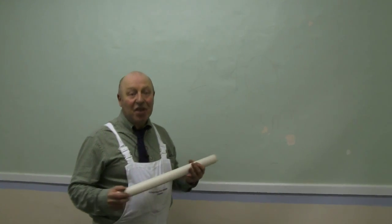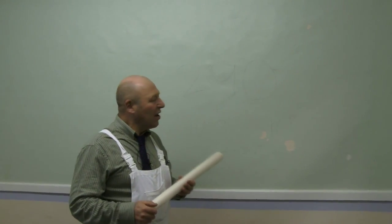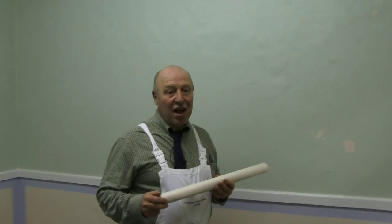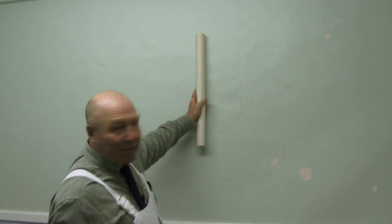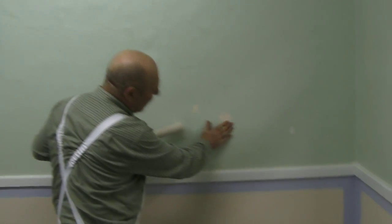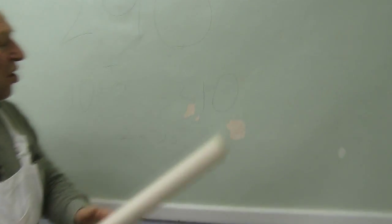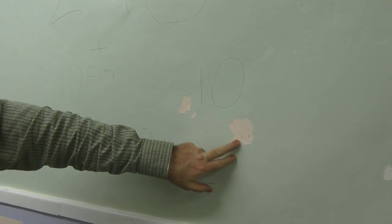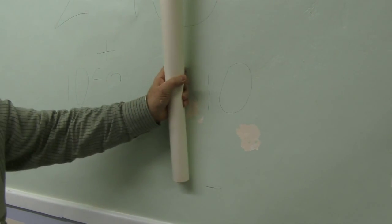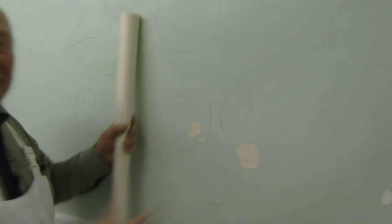Why are we cross-lining is the first question we have to ask. There's two reasons we cross-line. One, we want an even, porous surface on the background. Because when we've got areas like this, what will happen is as the paste dries here, it will dry there a lot quicker. So lining paper will prevent that happening for us.